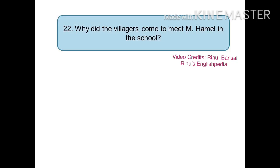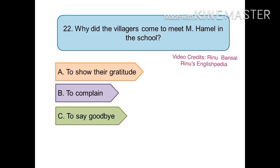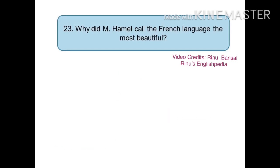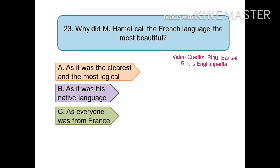The next question is: why did the villagers come to meet Monsieur Hamel in the school? The options are (a) to show their gratitude, (b) to complain, (c) to say goodbye, or (d) to gossip. The right answer is (a) to show their gratitude. The 23rd question is: why did Monsieur Hamel call the French language the most beautiful? The options are (a) as it was the clearest and most logical language, (b) as it was his native language, (c) as everyone was from France, or (d) none of these. The right answer is (a) as it was the clearest and most logical language.